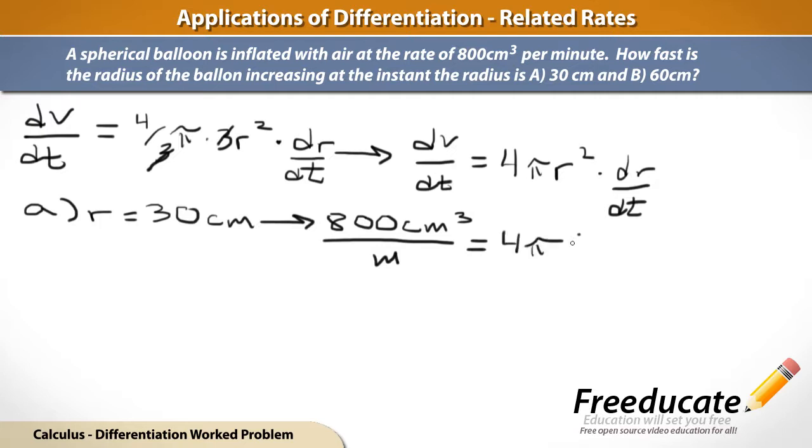Remember, we're concerned with the instant that the radius is 30 centimeters. So r, we just plug in 30 centimeters. That quantity squared times our only unknown, dr/dt. And that's what we're trying to solve for. One equation, one unknown. This should be solvable. We just clean it up a little bit.